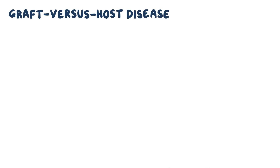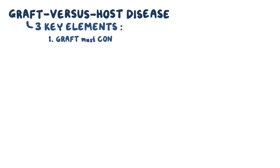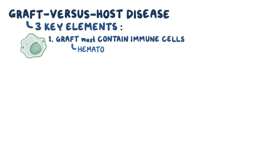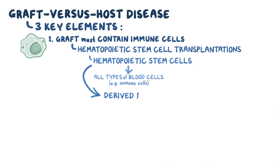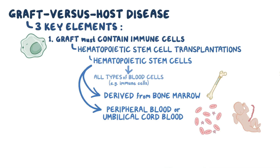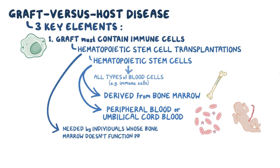In graft-versus-host disease, there are three key elements. First, the graft must contain immune cells. This is usually the case in hematopoietic stem cell transplantations, which contain hematopoietic stem cells that can give rise to all types of blood cells, including immune cells. Hematopoietic stem cells are derived from bone marrow, which is the spongy tissue inside bones where new blood cells are formed. Alternatively, they can come from the peripheral blood or umbilical cord blood from a newborn baby. Typically, these transplantations are needed by individuals whose own bone marrow doesn't function properly, for example, those suffering from leukemia.